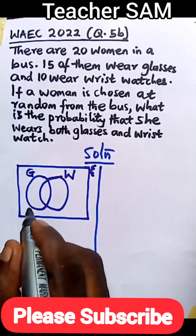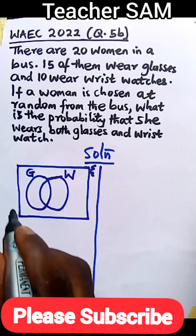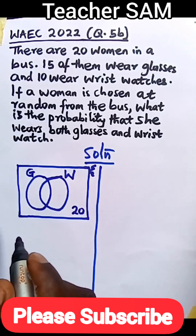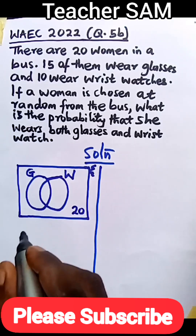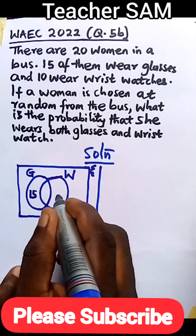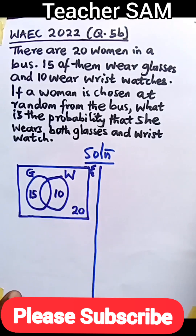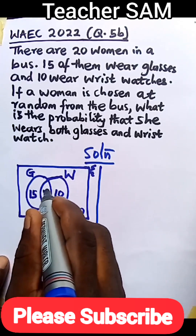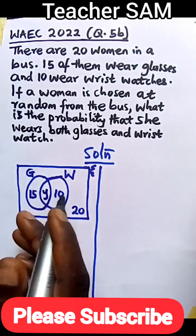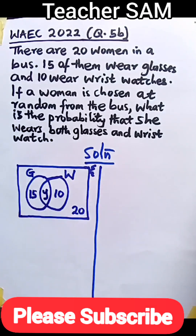Universal set. From the equation, there were 20 women, so the total is 20 women. 15 of them wear glasses, so those that wear glasses: 15. 10 wear wristwatch. The number of women that wear both wristwatch and glasses — we don't know that. That is the point of intersection, the point where G and W intersect, representing those that wear both glasses and wristwatch. Once we can find that, we move to probability.